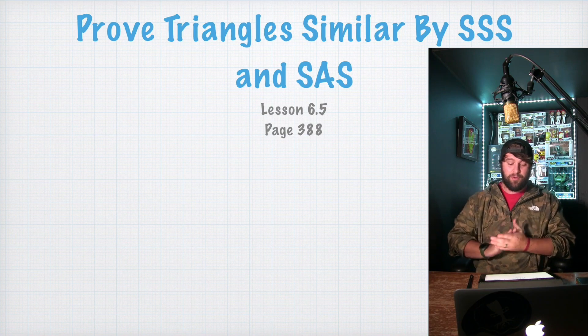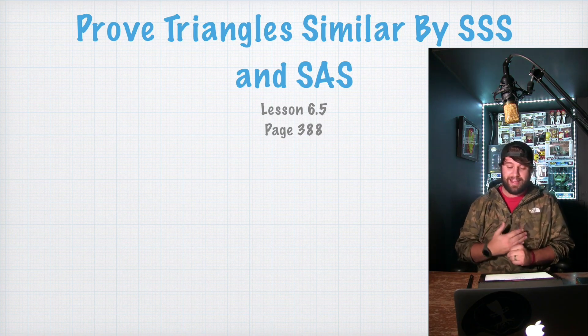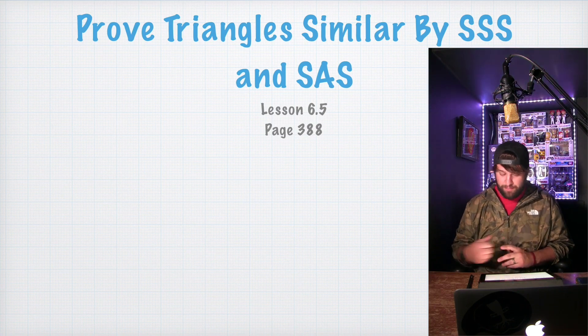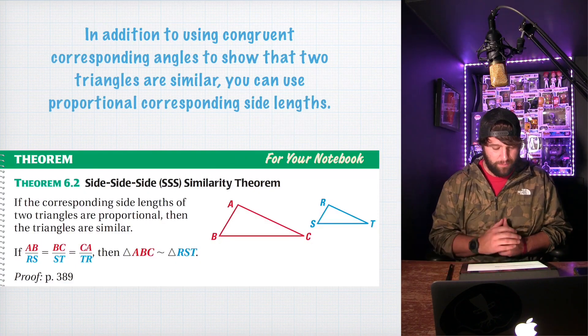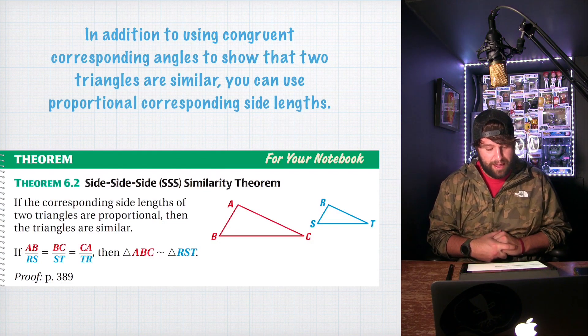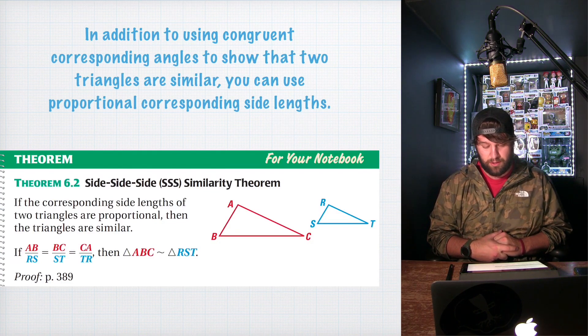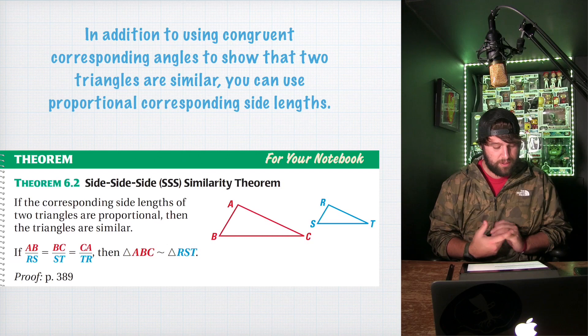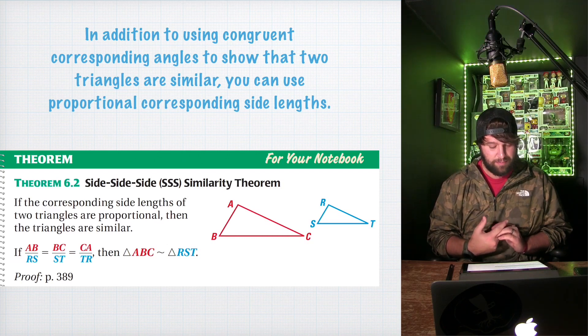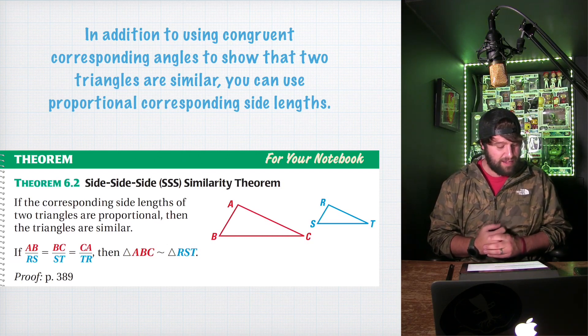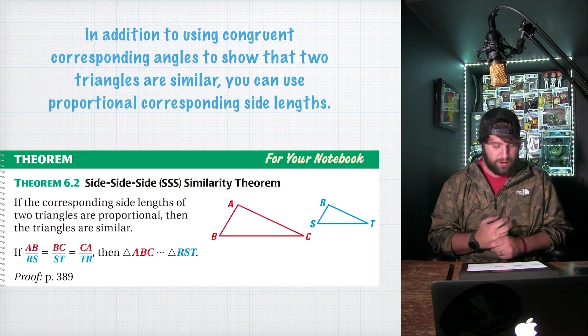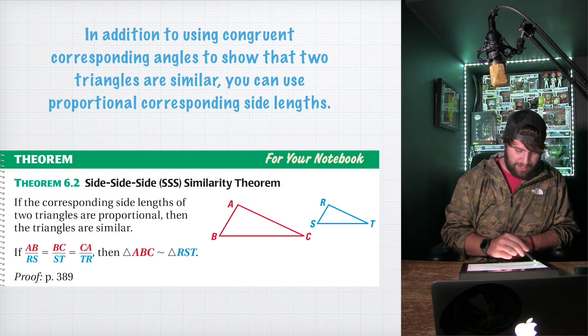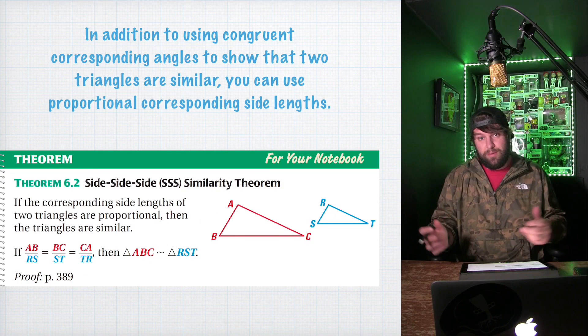All right, so today we're going to learn how to prove triangles similar by SSS and SAS. This is lesson 6.5, page 388. In addition to using congruent corresponding angles to show that two triangles are similar, you can use proportional corresponding side lengths. Theorem 6.2, side-side-side similarity theorem. If the corresponding side lengths of two triangles are proportional, then the triangles are similar. So if you know that all the sides are proportional, you could say that the two triangles are similar.